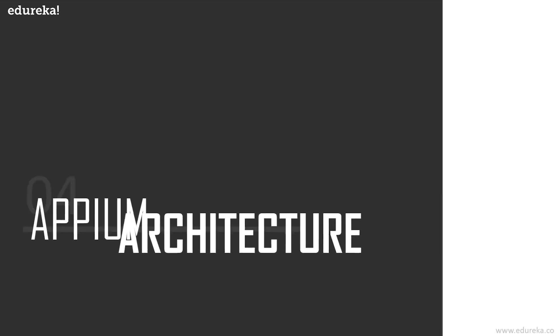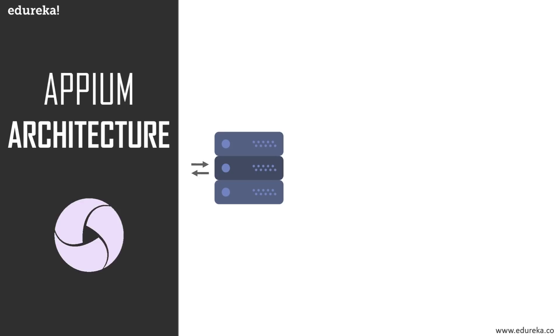Now it's time to discuss the Appium architecture. Appium is an HTTP server using Node.js — the blue icon on your screen represents the server. The arrows coming in and out of the server represent requests and responses. A request is sent by the client and the response is sent back to the client. When a request comes into the server, the Appium server differentiates between the request and decides whether it is an iOS or an Android request.